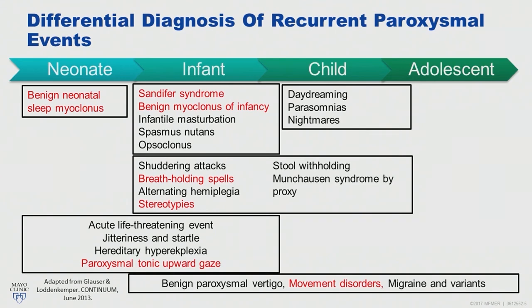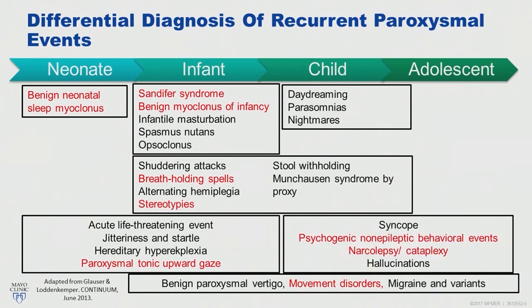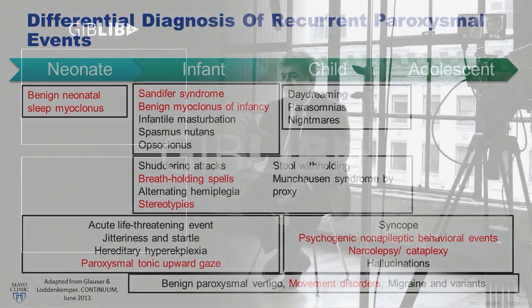In children, consider daydreaming misinterpreted as absence seizures, nighttime events such as parasomnias or nightmares. In adolescents, consider syncope, psychogenic non-epileptic behavioral events, sleep disorders including narcolepsy and cataplexy, and hallucinations. Among syndromes that may span a broader age group: benign paroxysmal vertigo, movement disorders, migraine, and variants.